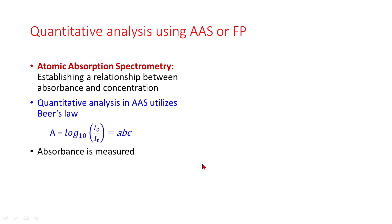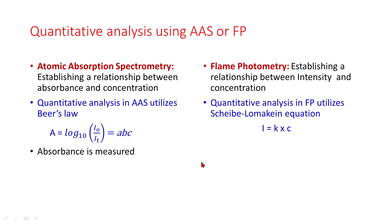Absorbance is measured. Whereas in case of flame photometry, it establishes a relationship between intensity and concentration. Quantitative analysis utilizes Scheibe-Lomakin equation: I equals k times c.